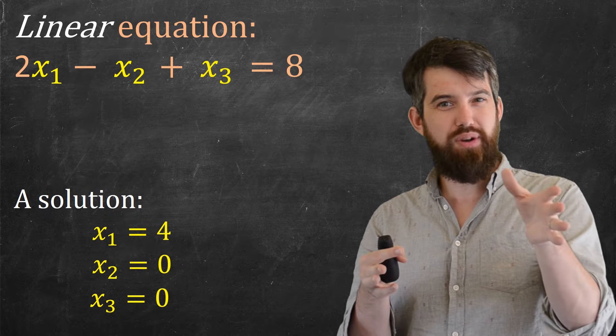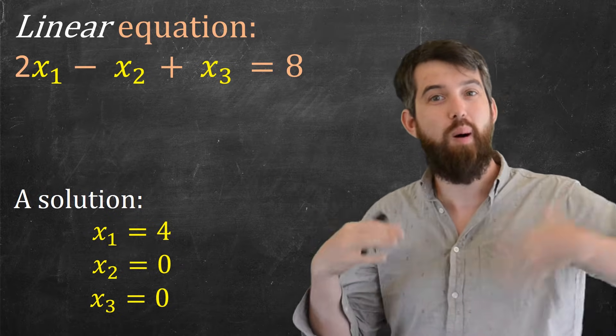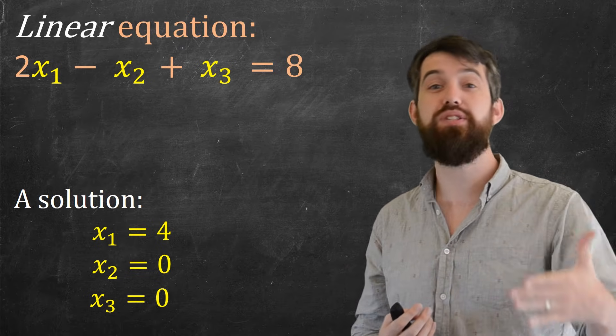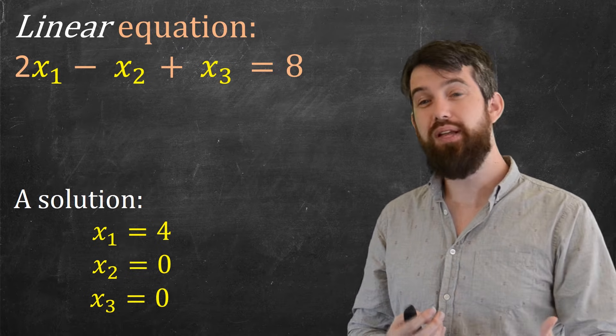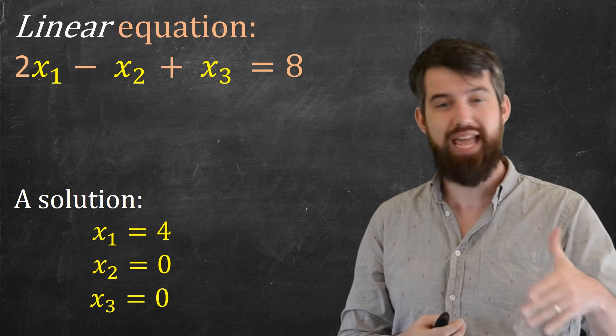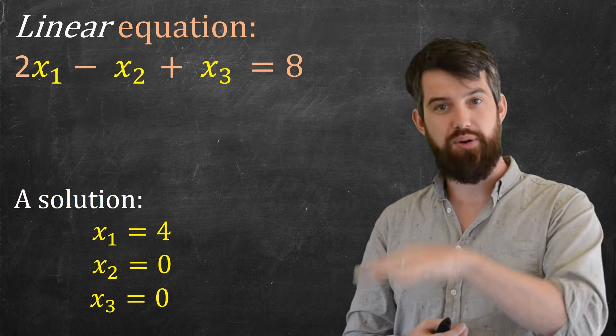And one thing to note is that often these linear systems have multiple different solutions. For example, x1 is 4, x2 is 0, and x3 is 0 is also a solution. That also satisfies this equation, 2 times 4 is 8, plus 0 plus 0 is equal to 8.